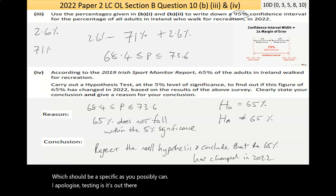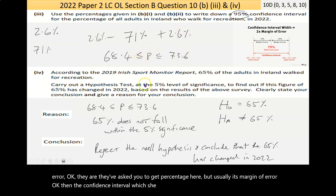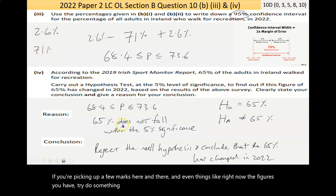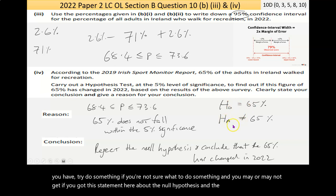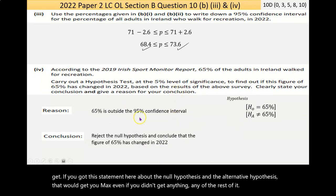Is 65% between our range? We got from part three. And it's not. I could rewrite that statement, 68.4 less than or equal to P is less than or equal to 73.6. You can say 65% does not fall within the 5% significance. And the conclusion is that we reject the null hypothesis. I probably should conclude that the 65% has changed in 2022. Should be as specific as you possibly can. Hypothesis testing is very tricky. It's hard to, and statistics is like this. It's often counterintuitive.